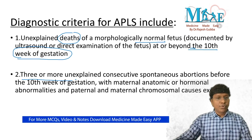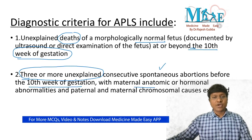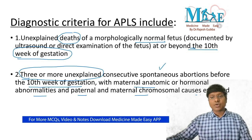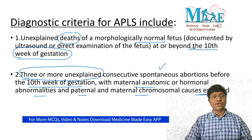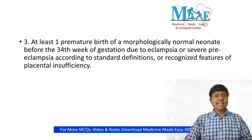The second diagnostic criteria is three or more unexplained consecutive spontaneous abortions before the 10th week of gestation, with maternal anatomic or hormonal abnormality and paternal and maternal chromosomal causes being excluded. After excluding all these causes, if the female has three or more unexplained consecutive spontaneous abortions before the 10th week, think of APLA syndrome.